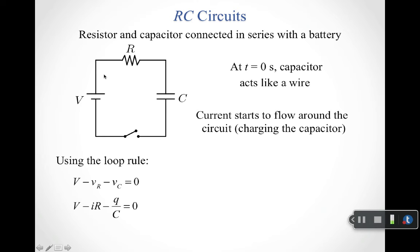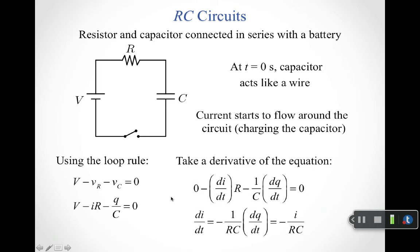Current flows around the circuit according to the battery's orientation. Starting from a reference point, there's an increase across the battery, a decrease across the resistor because we're going in the direction of the current, and a decrease across the capacitor because we're going from the positively charged plate to the negatively charged plate. Applying the loop rule gives us an equation involving the voltage across the resistor using Ohm's law v equals IR.